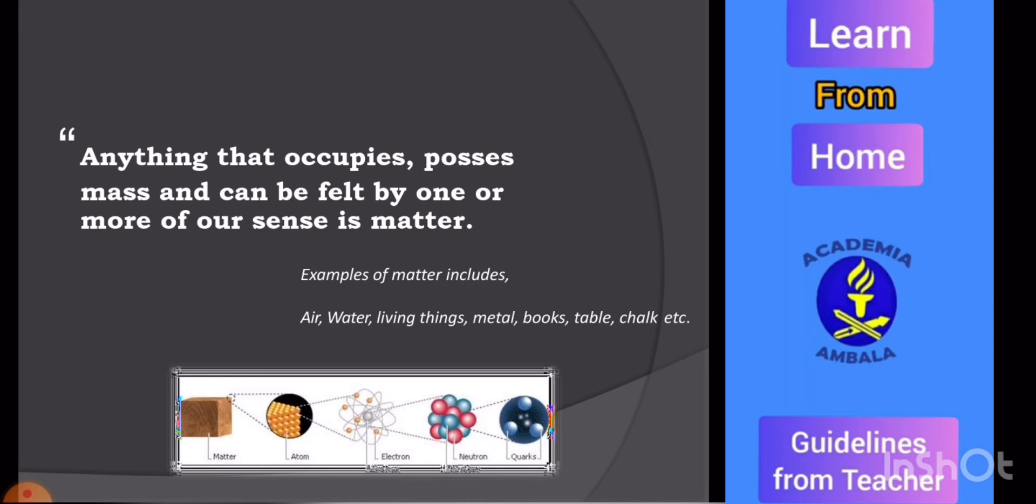Now what is matter? Matter is anything that occupies space and possesses mass, and it can be felt by one or more of our senses. Examples: air, water, living things, metals, books, tables, chairs, etc.